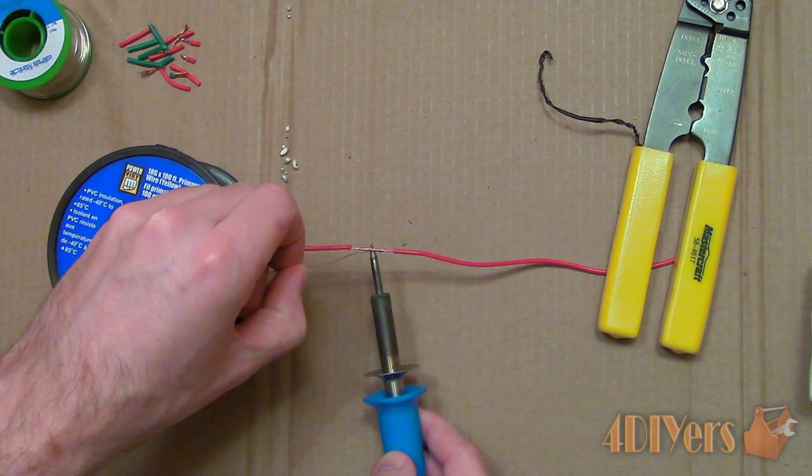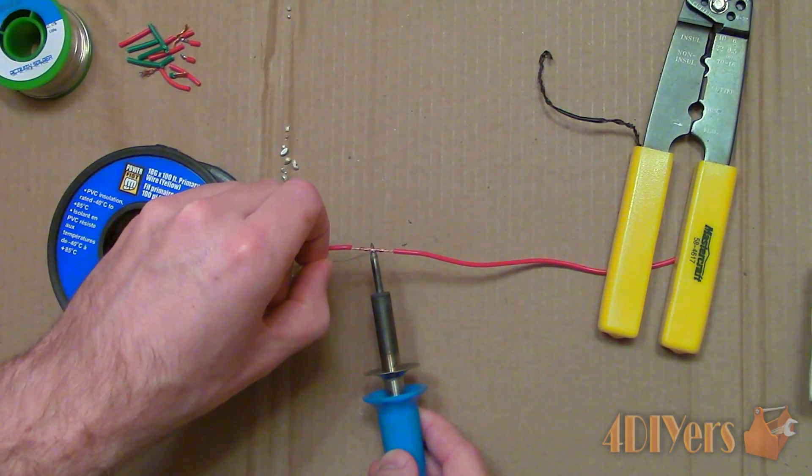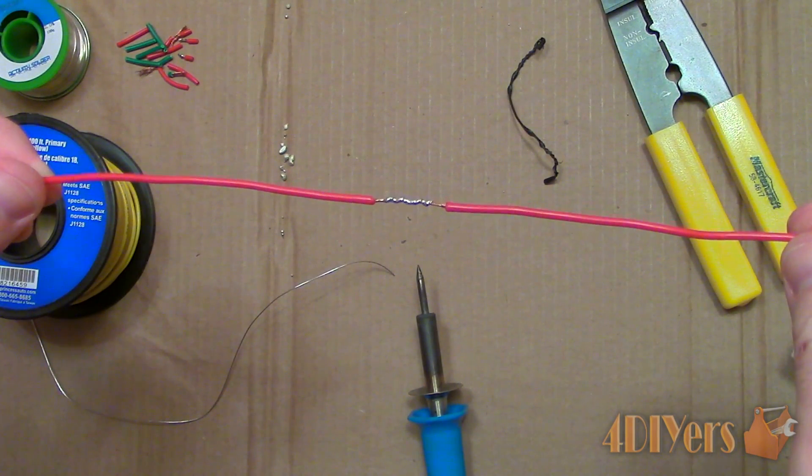Now we can solder the joint. Again, ensure the tip is tinned, then apply it to the joint, allow it to heat up and apply solder. Finally, you should be left with something such as this.